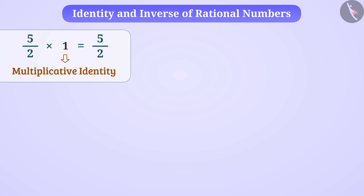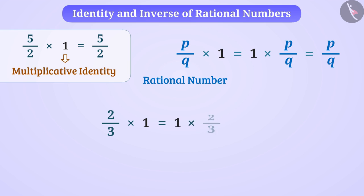In brief, for a rational number p by q, p by q multiplied by 1 is equal to 1 multiplied by p by q is equal to p by q. For example, answer of 2 by 3 multiplied by 1 or 1 multiplied by 2 by 3 is 2 by 3 only.